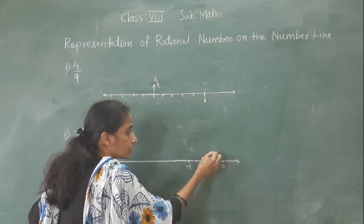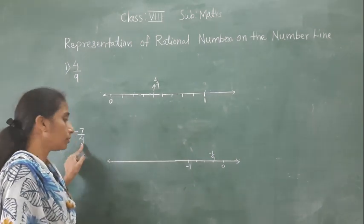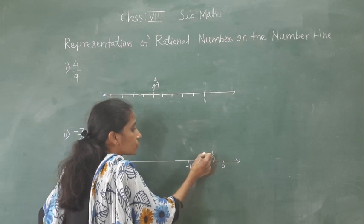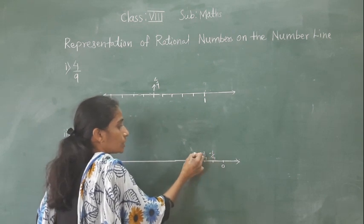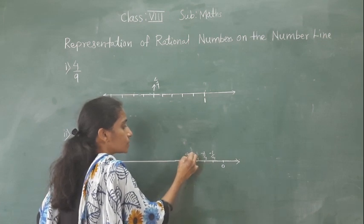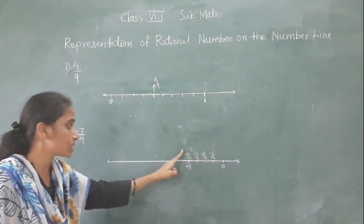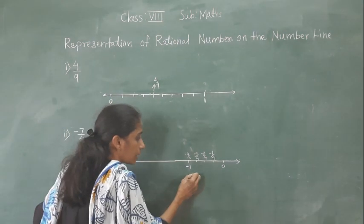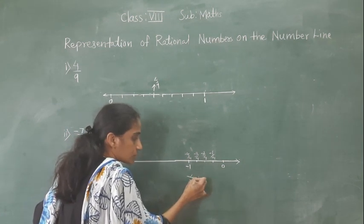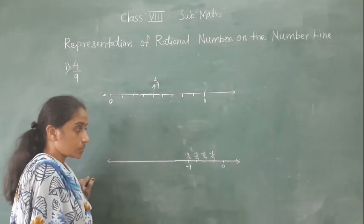This number is minus 1 upon 4. How many equal parts have we done? 4 equal parts. So this next number will be minus 2 upon 4, then minus 3 upon 4, then minus 4 upon 4. But we want minus 7 upon 4. Minus 4 upon 4 means 4 divided by 4 equals 1 — so this point is minus 1.